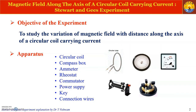The apparatus required for this experiment includes a circular coil, magnetic compass box, ammeter (used to measure the current), rheostat (which can vary the resistance in the circuit), commutator (used to change the polarity of the current), a DC power supply, connecting wires, and a key.